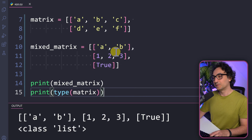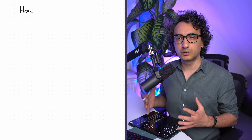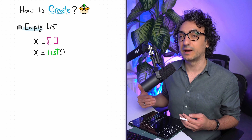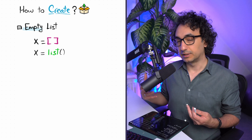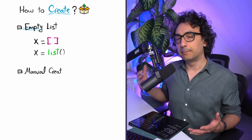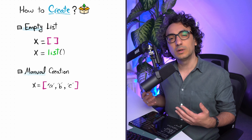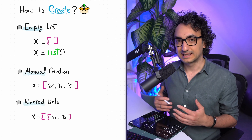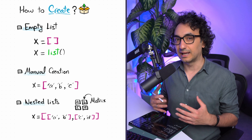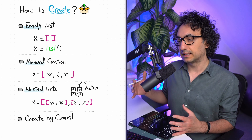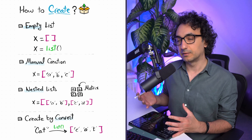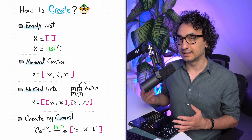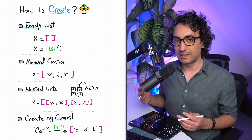To recap, there are different ways to create a list. First, an empty list using square brackets or the list() function with nothing inside — useful when you plan to add items later. Second, manually adding items when you already know what they are. Third, building a matrix by nesting lists inside a list — great for table-like structures with rows and columns. Fourth, converting existing data of another type to a list using list(). You've now learned everything about how to create a list from scratch and can go and apply methods on it.